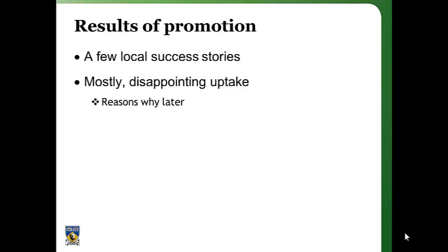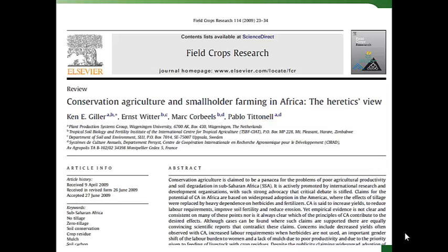After a few years of promotion, some critical voices started to emerge, saying there was too single-minded an emphasis on conservation agriculture, and that it was being promoted in a relatively unthoughtful way — too broadly, without considering the areas to which it might be appropriate. An example is a paper by Ken Giller and colleagues, who — though deeply involved in CA research — were not convinced that conservation agriculture was the panacea some people seemed to think.